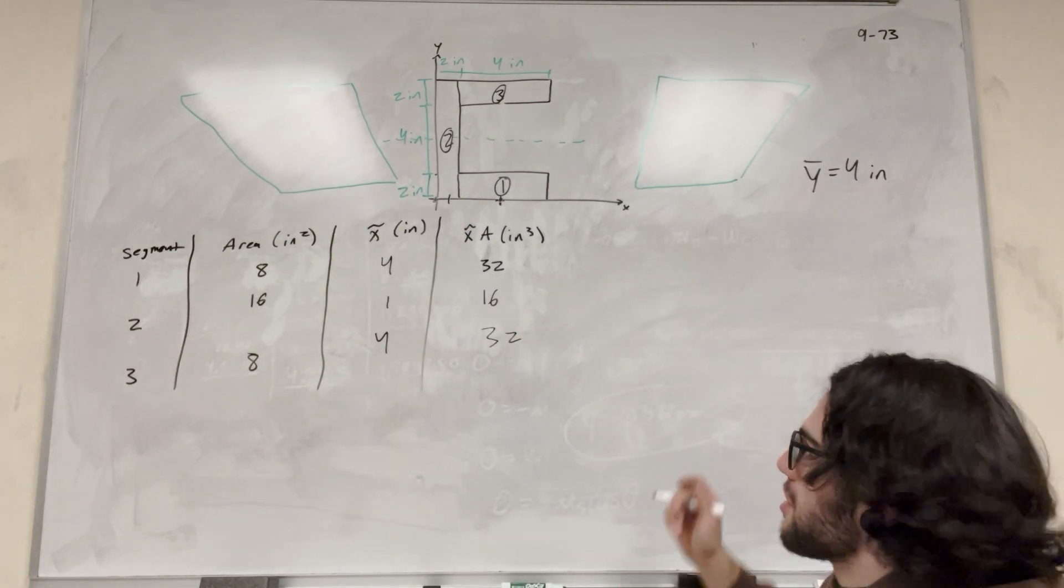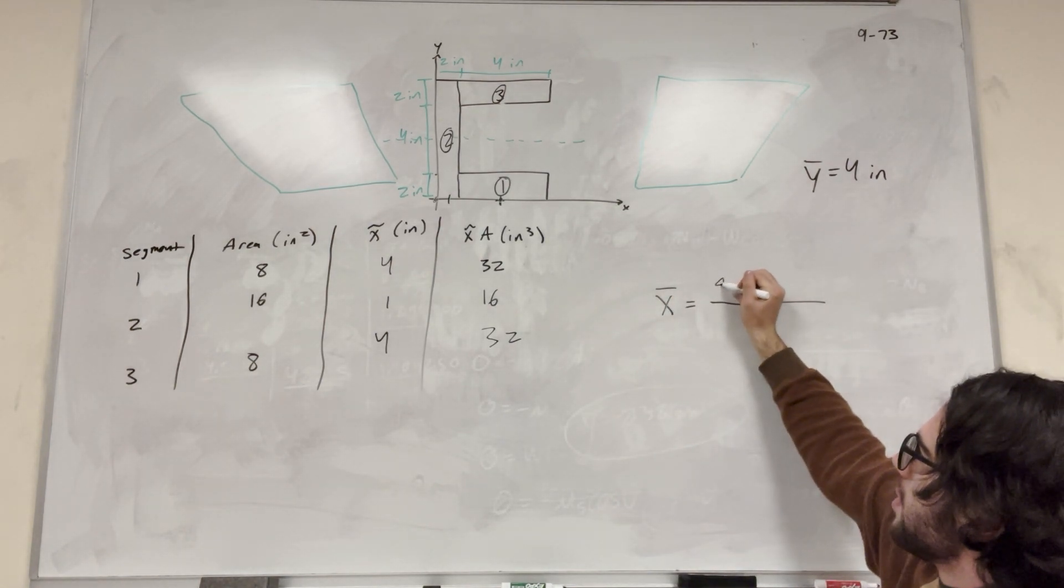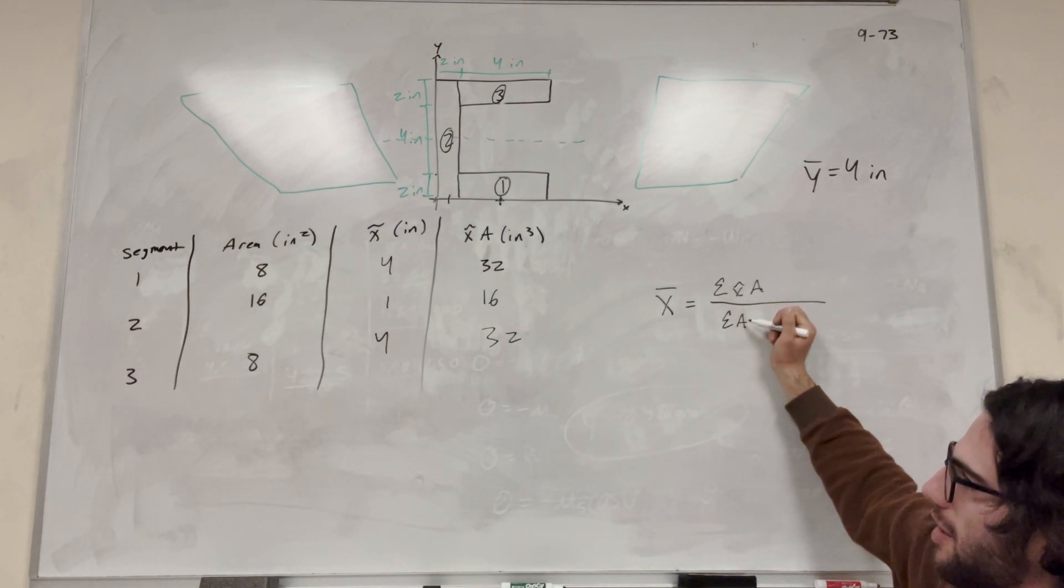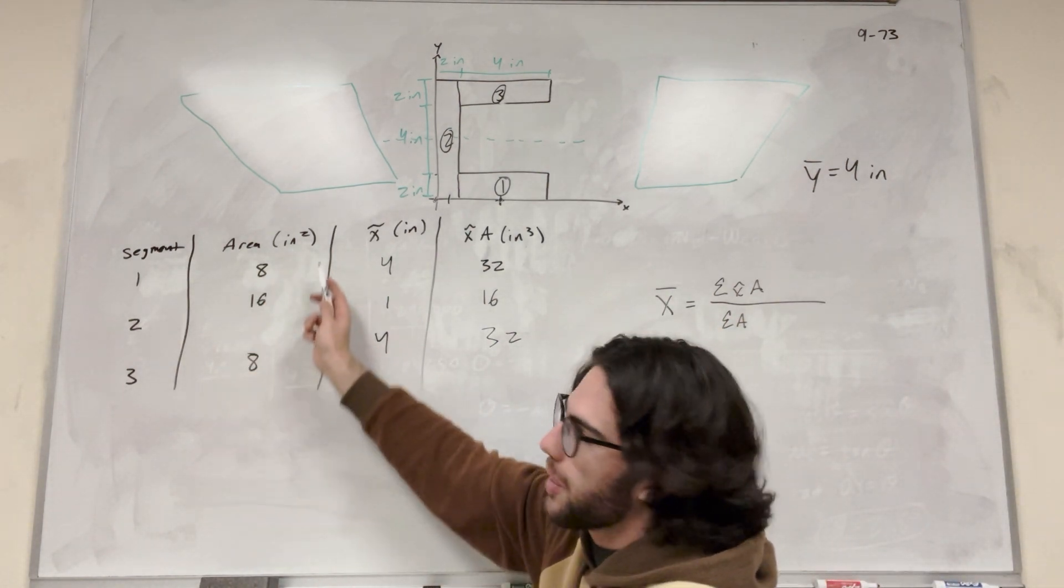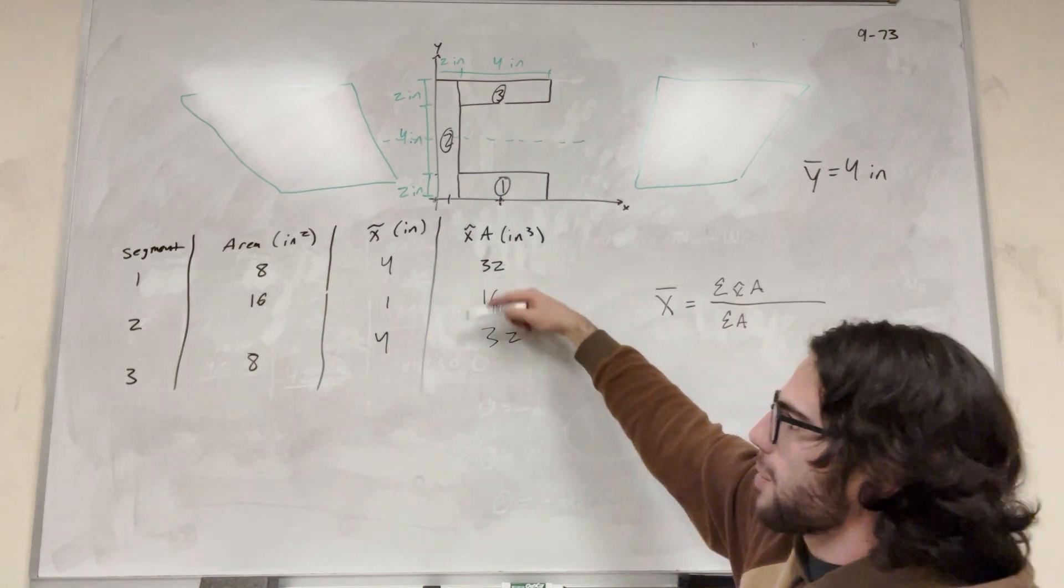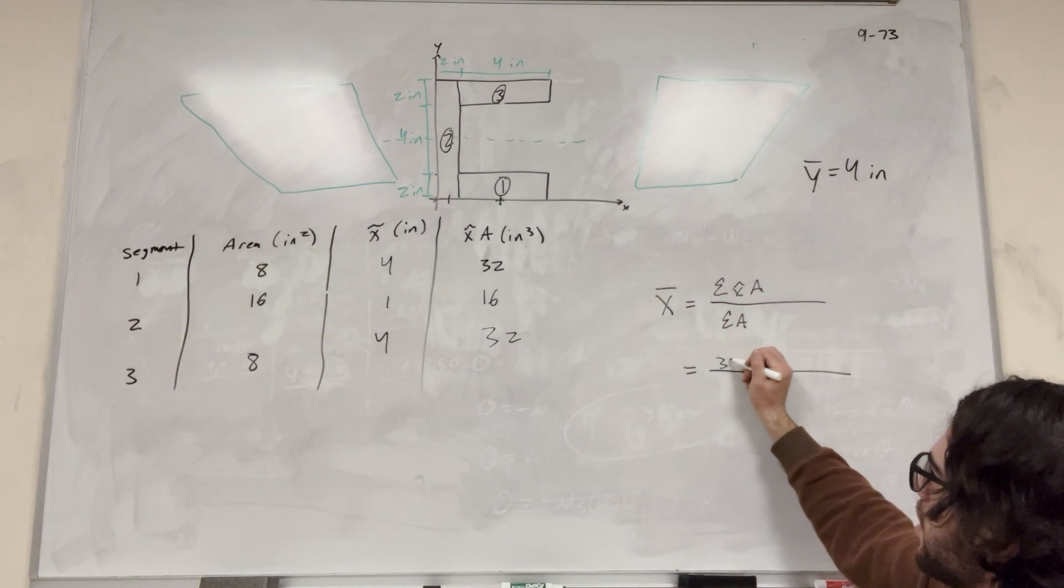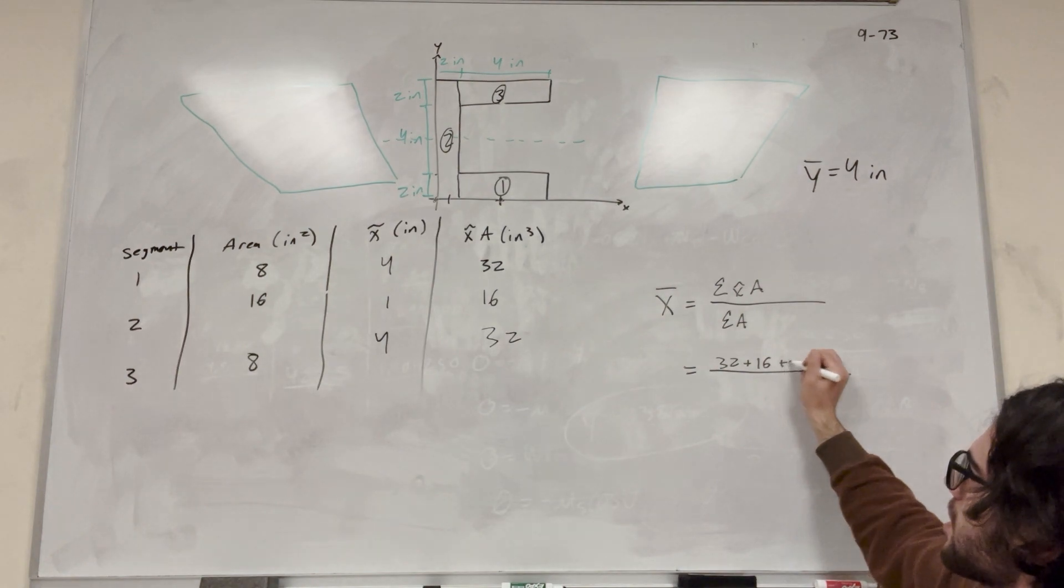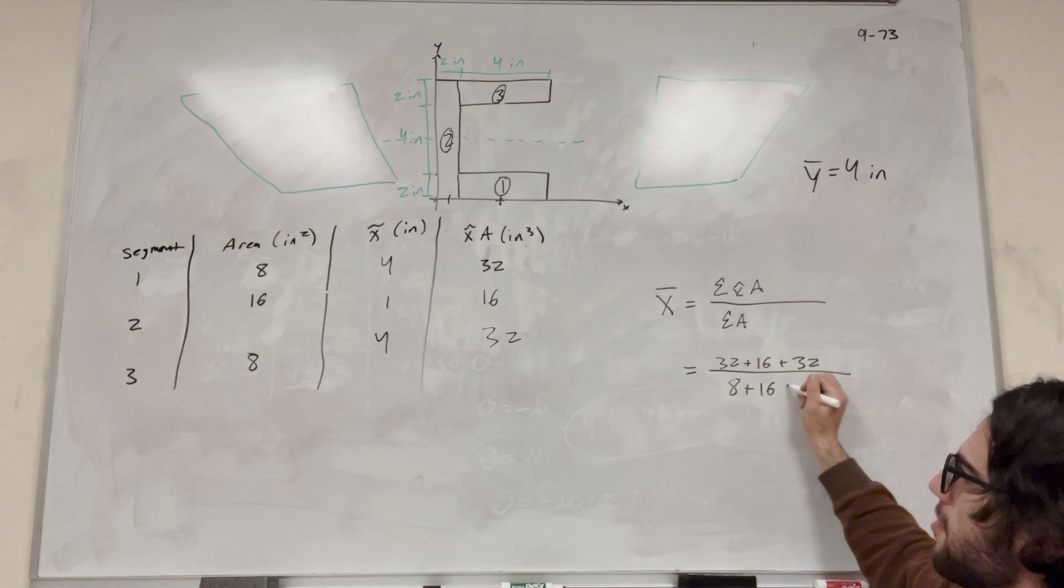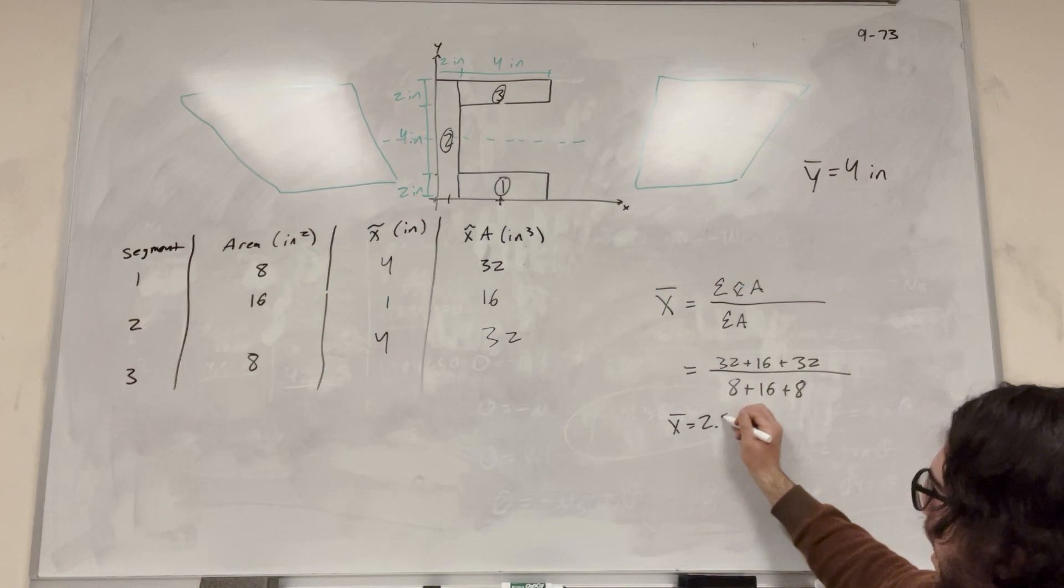So now all we have left to do is to use our equation. So our equation to find x bar, which would be the same for y bar, is we're going to add up the x tilde areas and divide it by the areas. So we have the areas here. These are the areas that we're going to add up on the denominator. And then these are the x tilde areas that we're going to add up on the numerator. So it's going to look like 32 is the first one, plus 16, plus 32, and then divide it by the sum of our areas, which is 8, plus 16, plus 8. Do the math on this. You get x bar is equal to 2.5 inches.